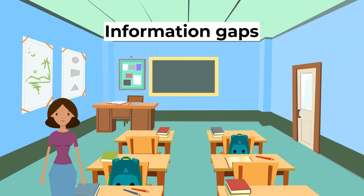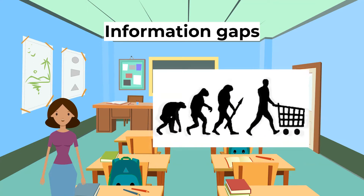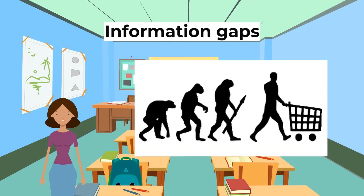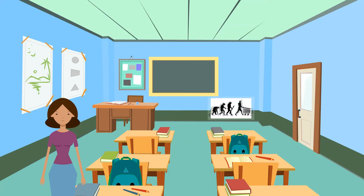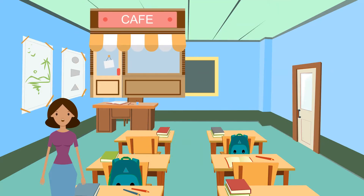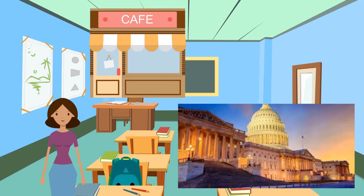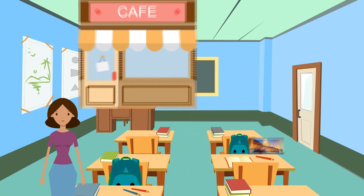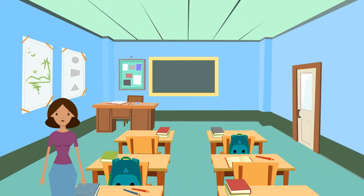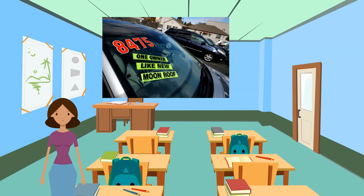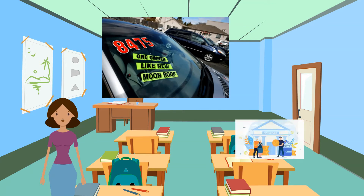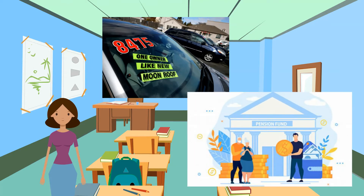The third type is information gaps. Homo economicus is assumed to have perfect information, allowing them to make rational decisions. Similarly, firms are assumed to have perfect information on their cost and revenue curves, and governments are assumed to know the full costs and benefits of each decision. In reality, this is not the case. Therefore, economic agents do not always make rational decisions and so resources are not allocated to maximize welfare. For example, consumers do not know the quality of second-hand products such as cars, and pension schemes are complex so it is difficult to know which one is best.